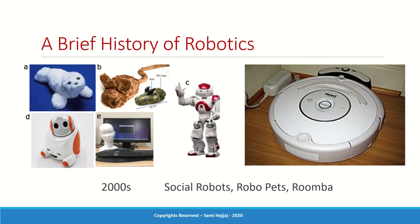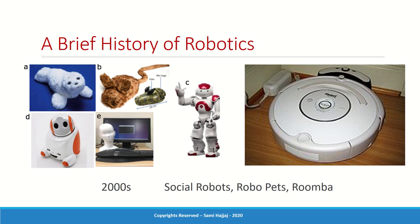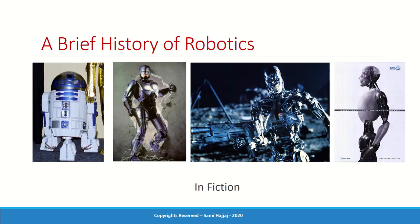From the 2000s onwards, we have social robots, social pets, dog-like robots, and the Roomba — the household vacuum cleaner robot, which is a mobile robot that works as a vacuum cleaner.